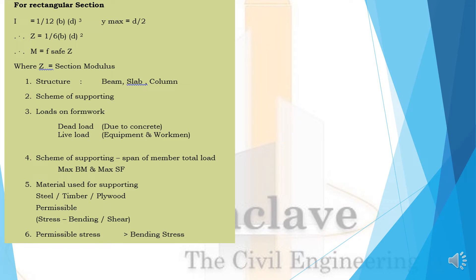For a rectangular section: I = (1/12) × B × D³, Y_max = D/2, so the section modulus Z = (1/6) × B × D². Therefore, M = F_safe × Z, where Z is the section modulus. The design steps are: 1) Identify structures — beams, slabs, and columns; 2) Scheme of supporting; 3) Loads on formwork — dead load due to concrete, live load, equipment, and workmen.